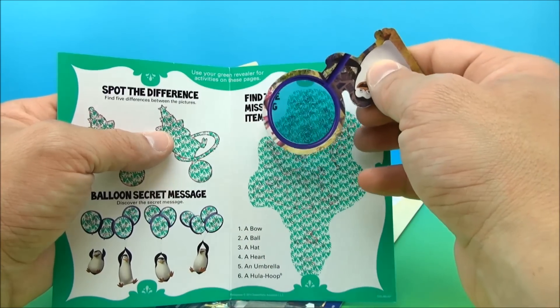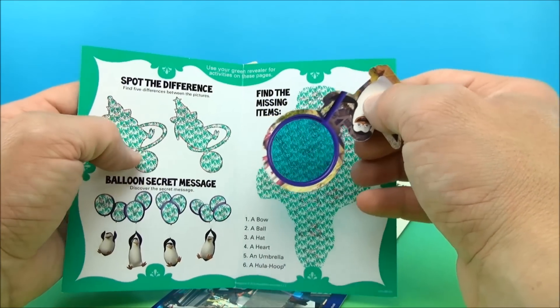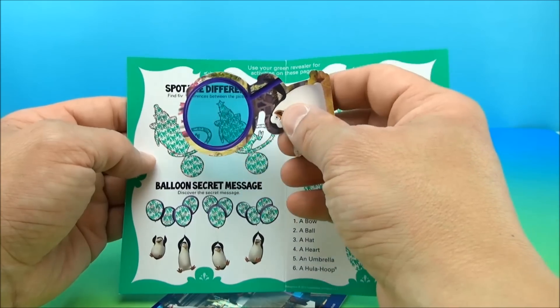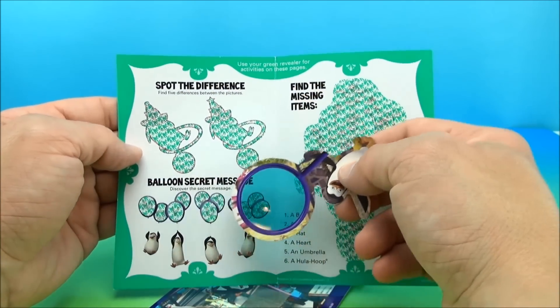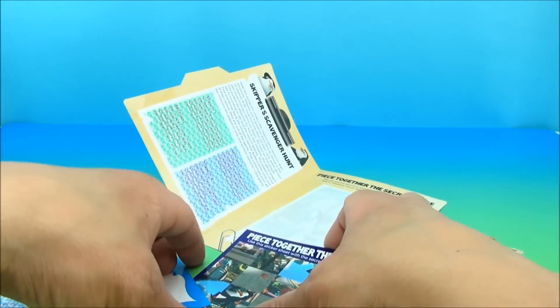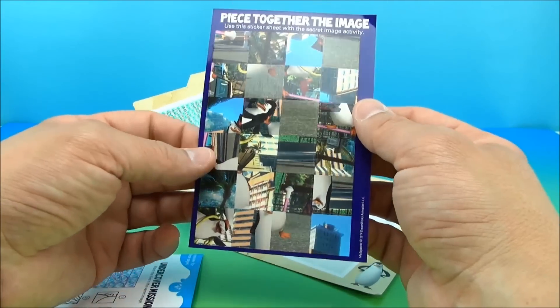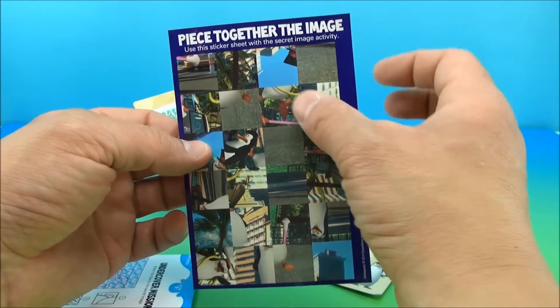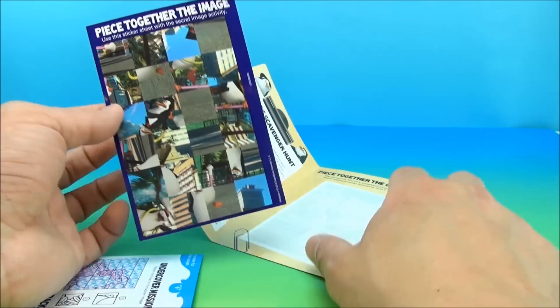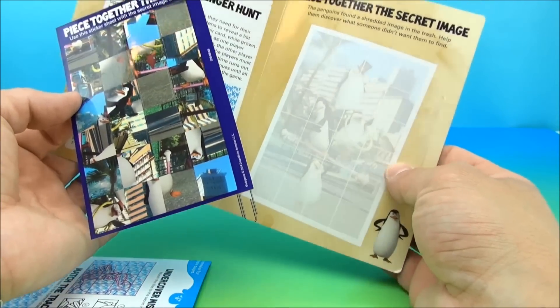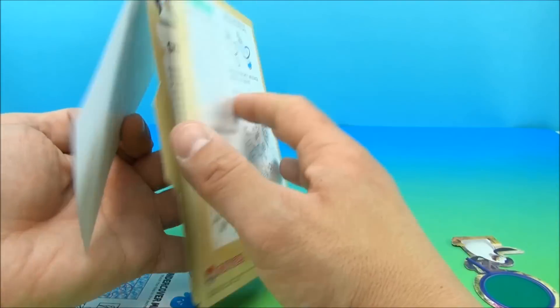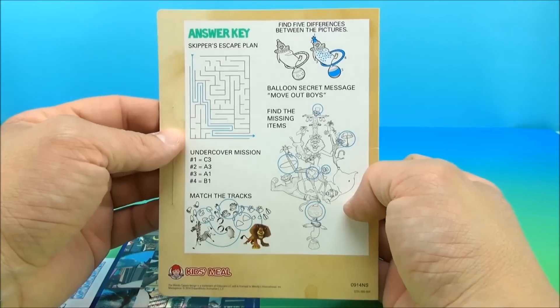Some from Madagascar, some from something else. You got the penguins, move your buns, whatever, piece together the image. You got stickers here that are going to make a puzzle. So that's kind of neat. You can put that on there, create the puzzle if you will, and complete the little image here. And then here are the answers to all of that.